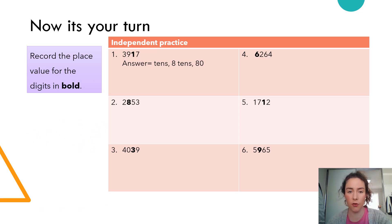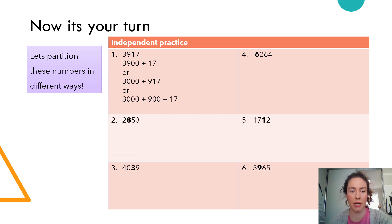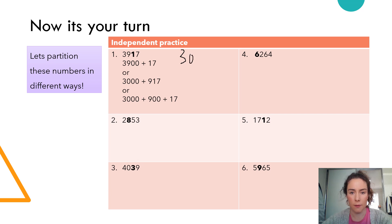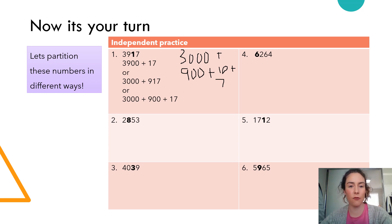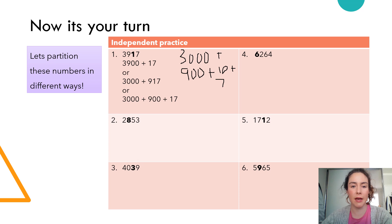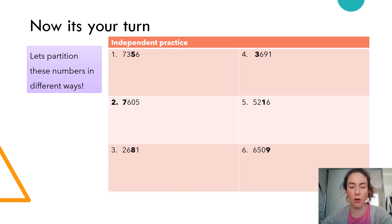We're continuing with the same activity from yesterday — write down the value of the bolded numbers. Now for today we are partitioning numbers but not in the normal way. Normally for 3,917 we would have 3,000 plus 900 plus 10 plus 7. But today I want different ways to partition — this is called non-standard partitioning. For example: 3,900 plus 17, or 3,000 plus 917, or 3,000 plus 900 plus 17. Partition these numbers in non-standard form.